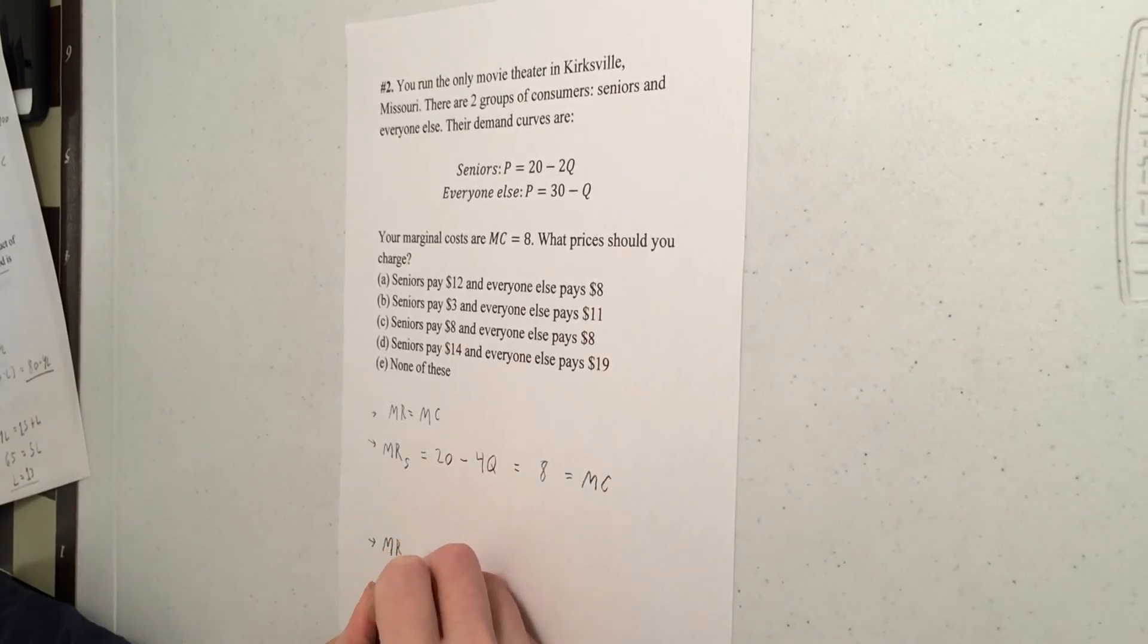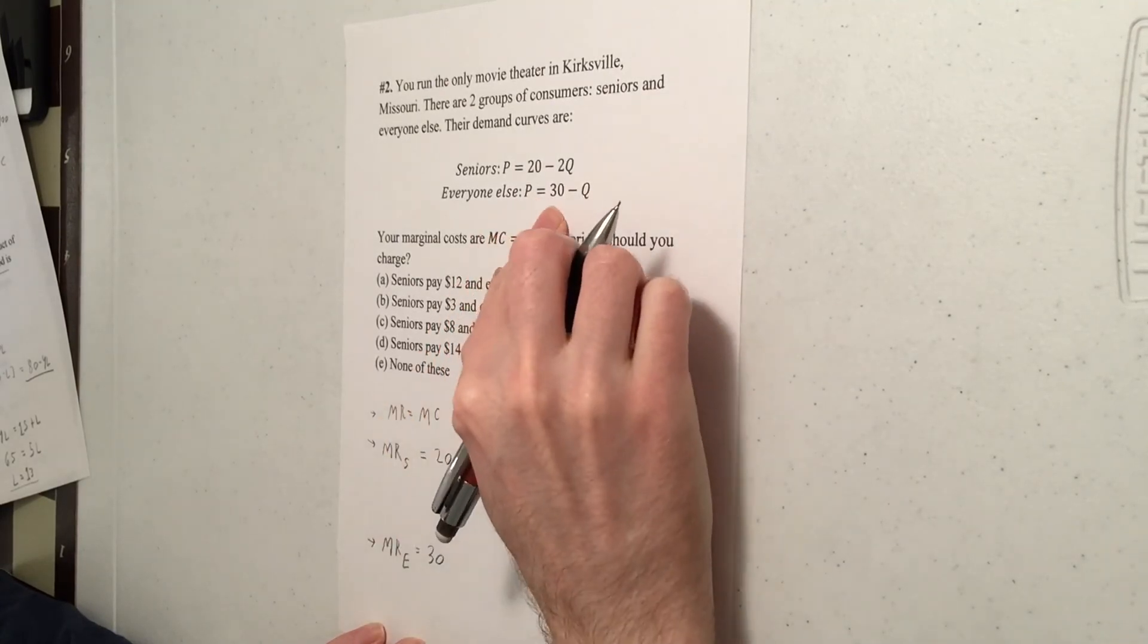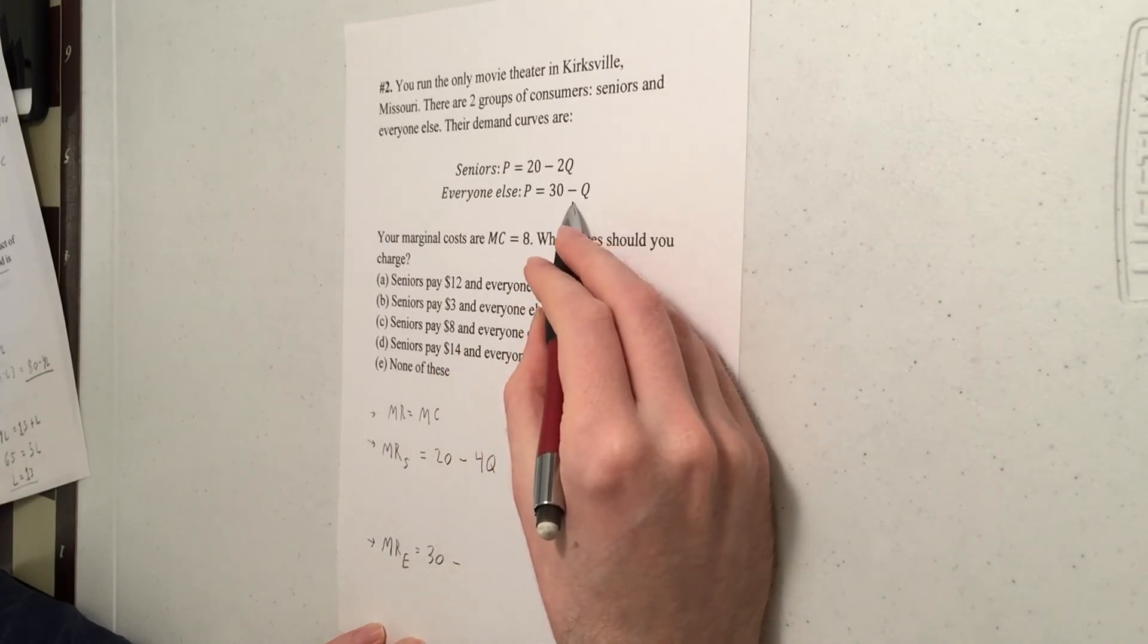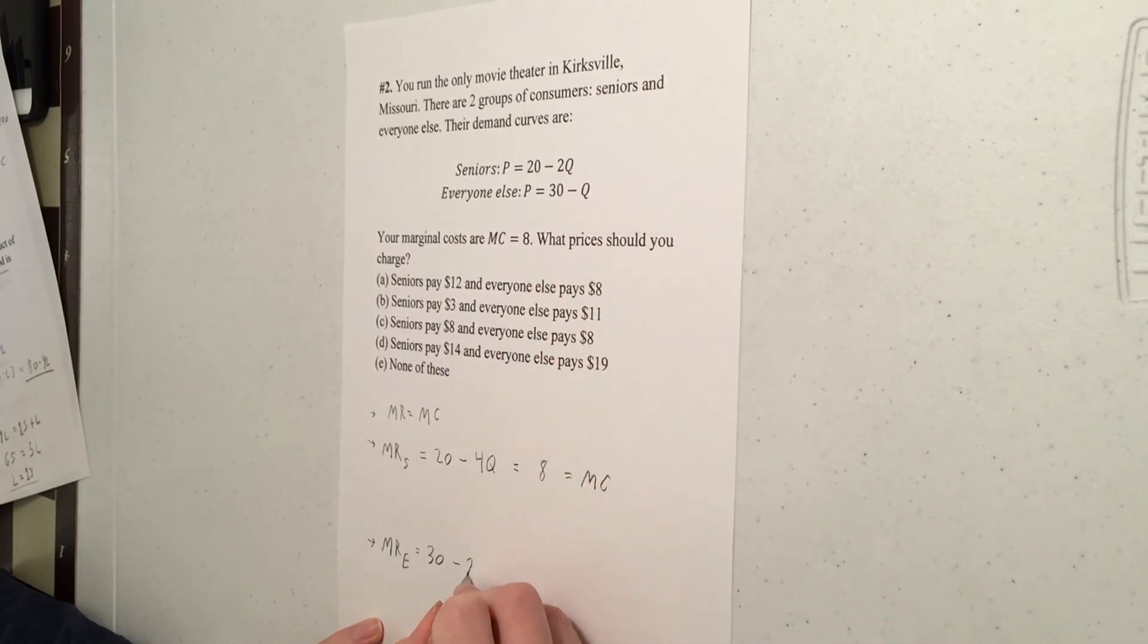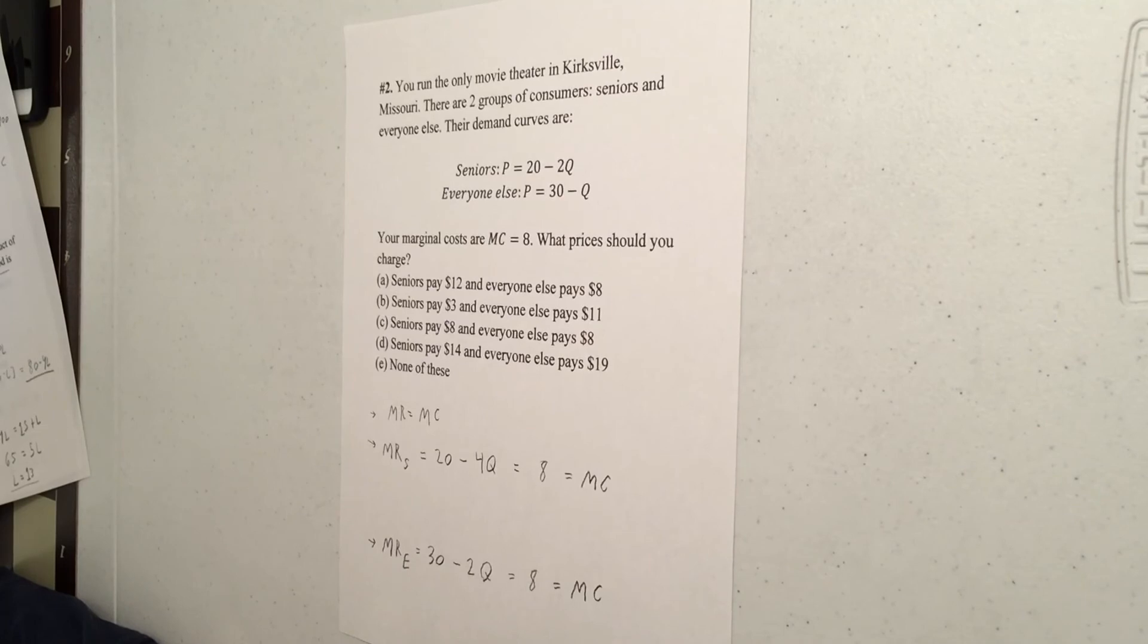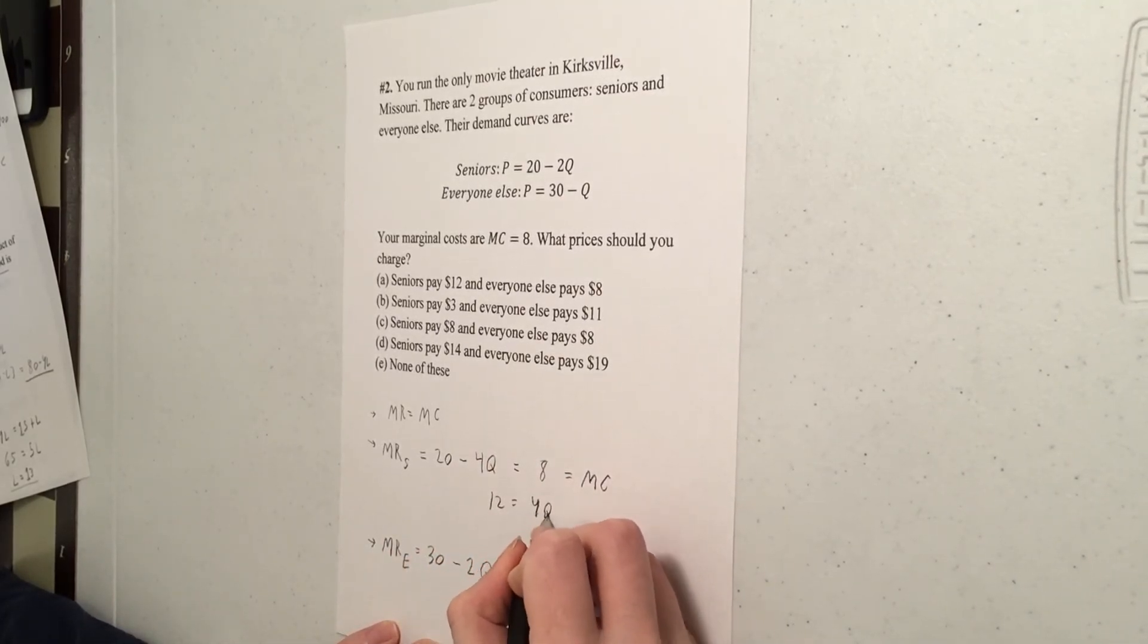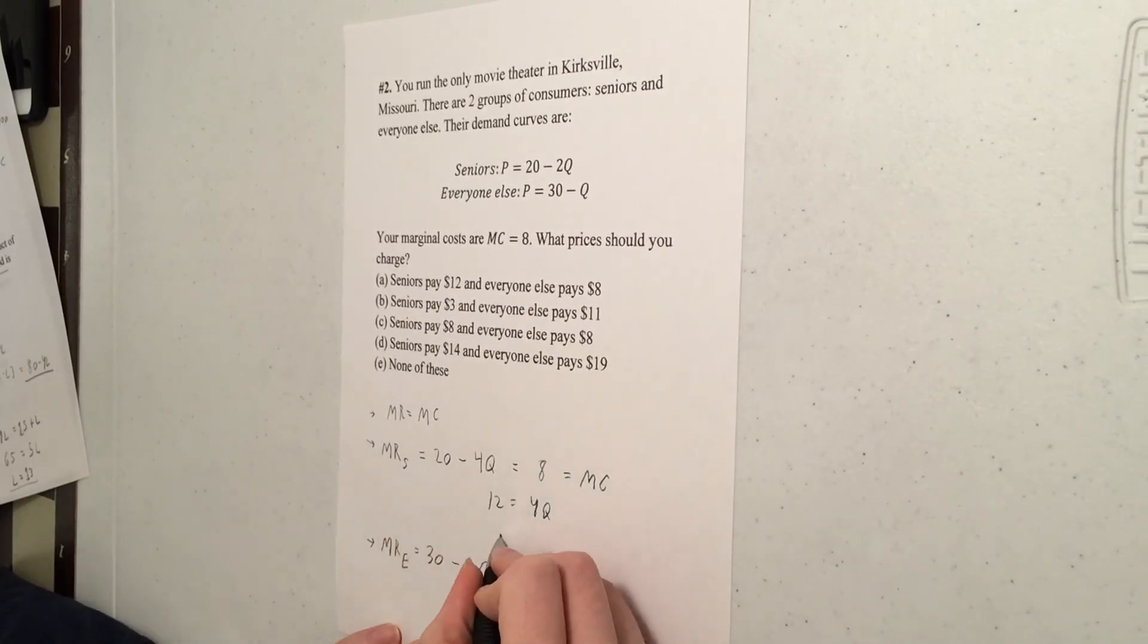So that's marginal revenue, set that equal to marginal cost. And likewise, for everyone else, marginal revenue for everyone else is going to be same intercept 30, but then you double the slope. So instead of being a slope of minus one, that slope is minus two. Then you set that equal to marginal costs. So if you rearrange, we're going to have 12 equals 4Q for the seniors.